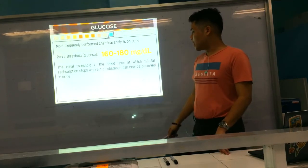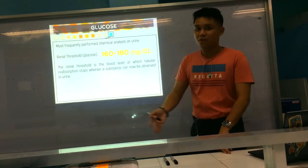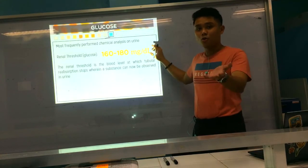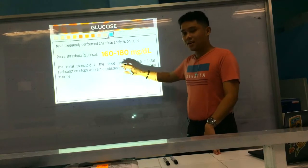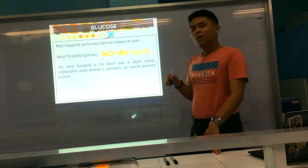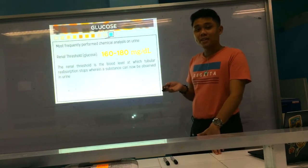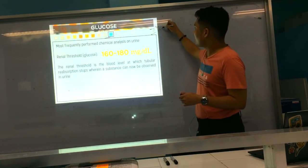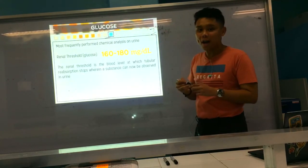The renal threshold is the level at which tubular reabsorption stops and a substance can now be observed in urine. If your blood glucose exceeds 180 mg/dL, it exceeds the renal threshold and glucose will spill into the urine. Regarding FBS levels, to indicate a patient is diabetic, the level must be greater than or equal to 126 mg/dL. Do not forget the greater than or equal sign.